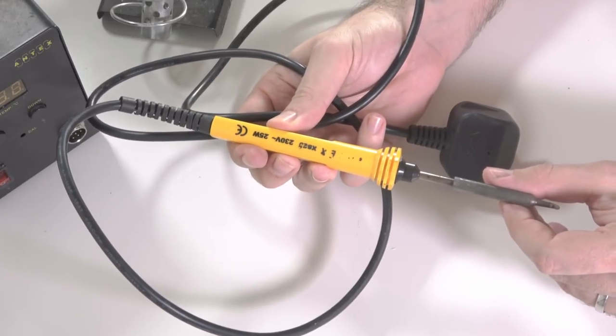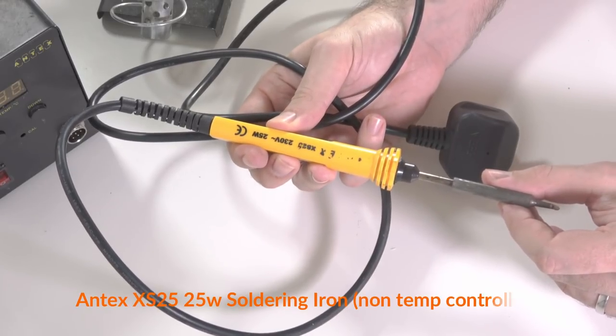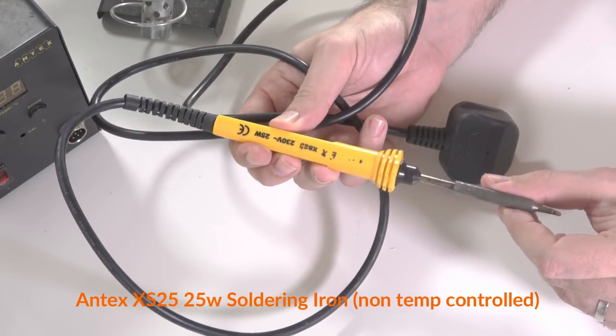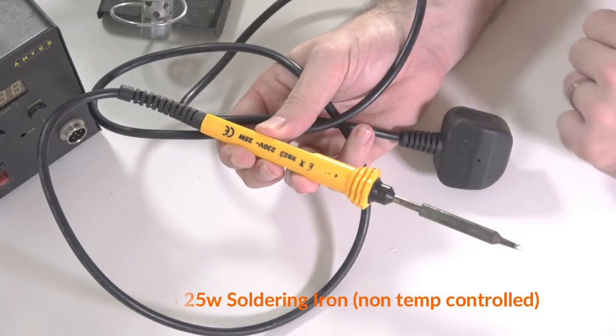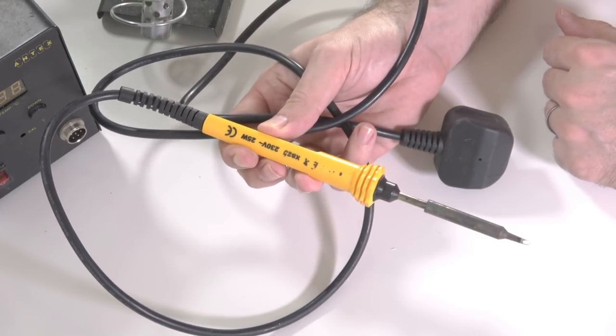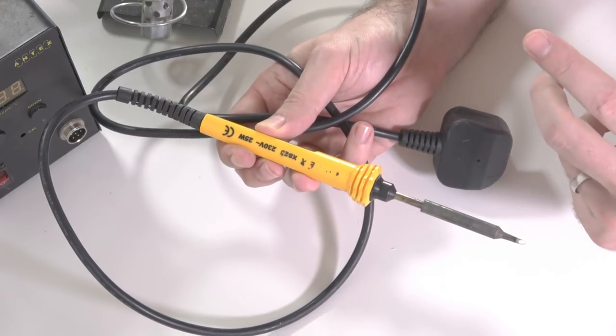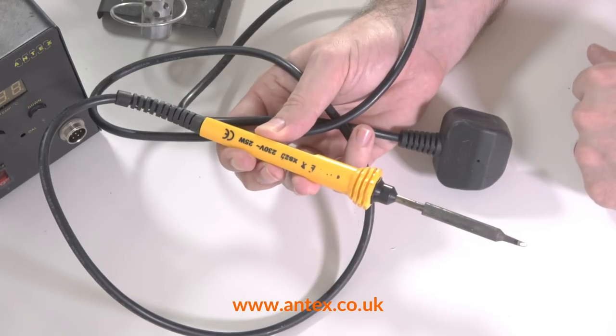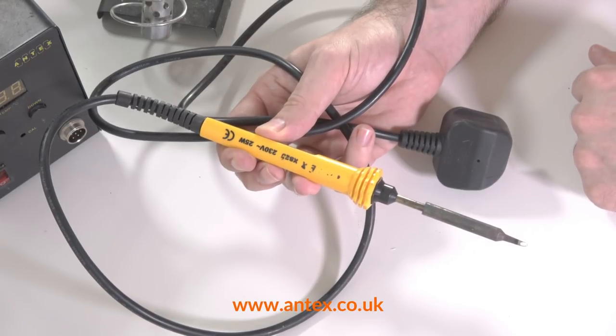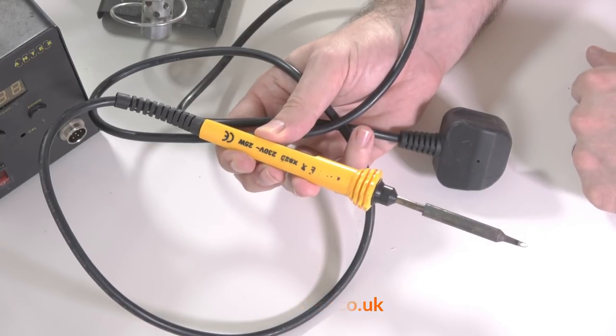As a secondary iron I've got this Antex 25 watt. I use this for electrical work and that's got a two and a half mil chisel tip on it as well. That's a very good iron. Antex are a great company, they're based in the United Kingdom, so support them, and they have superb customer service. I use them for all of my soldering iron stuff, they're fantastic.